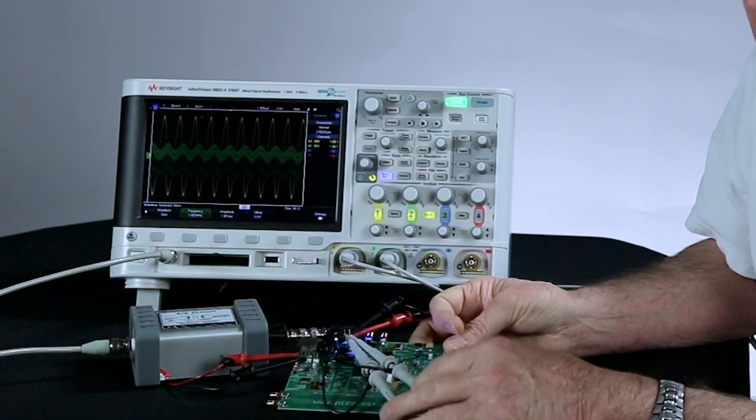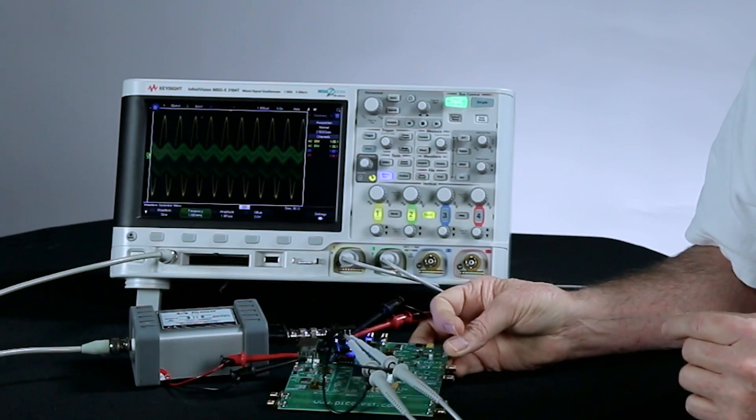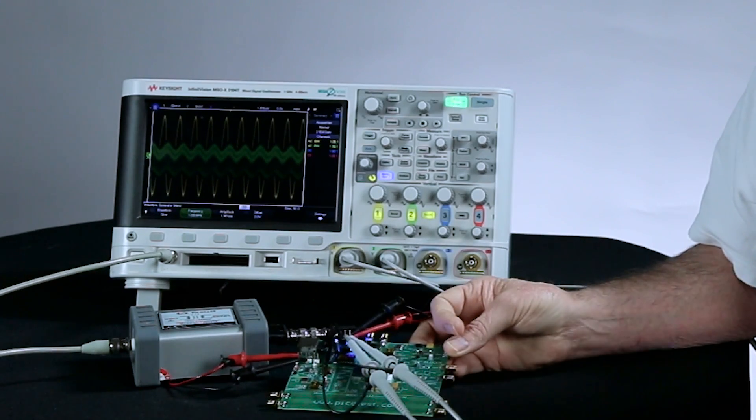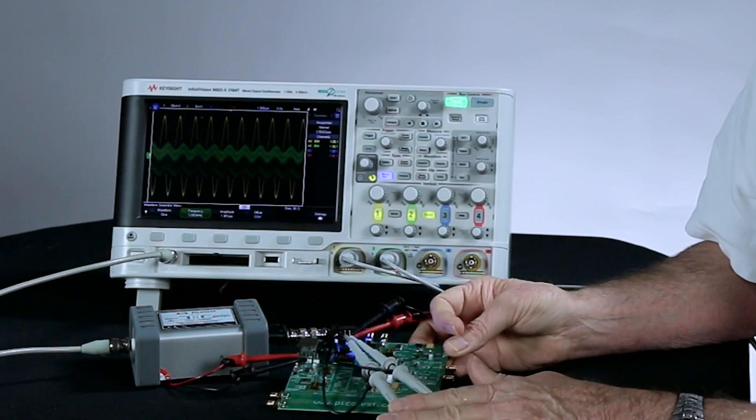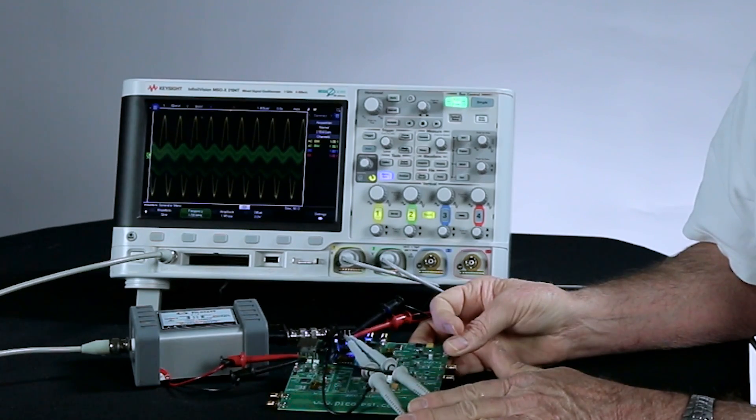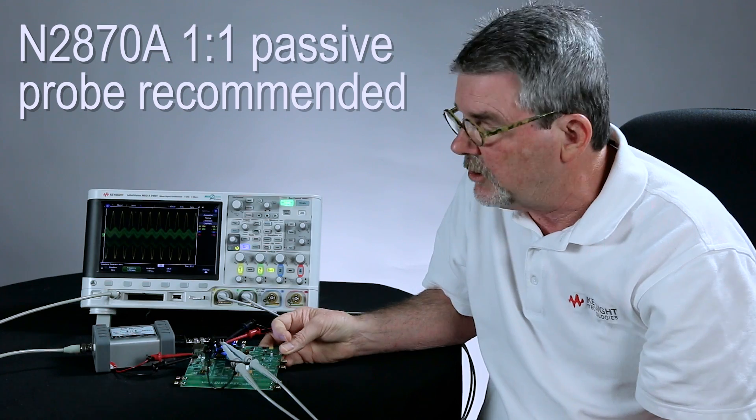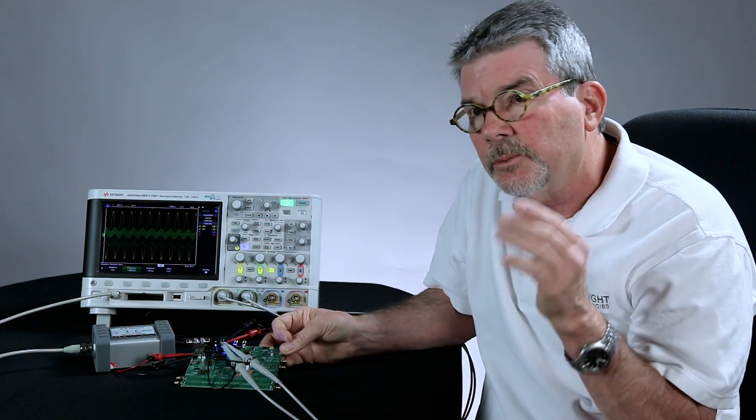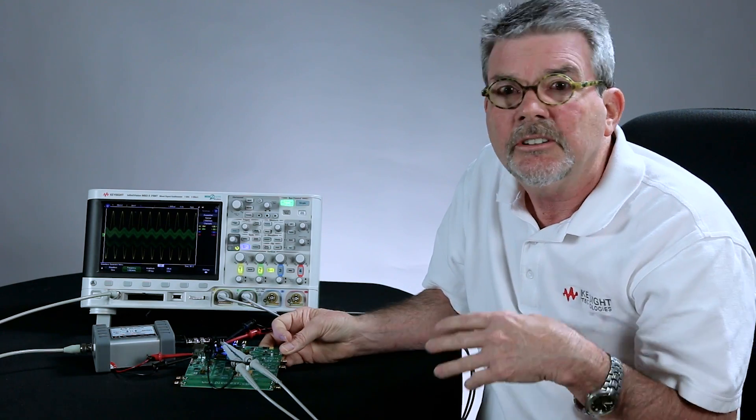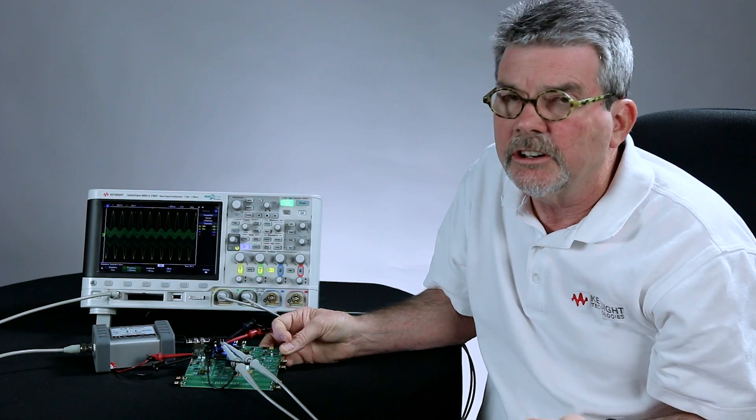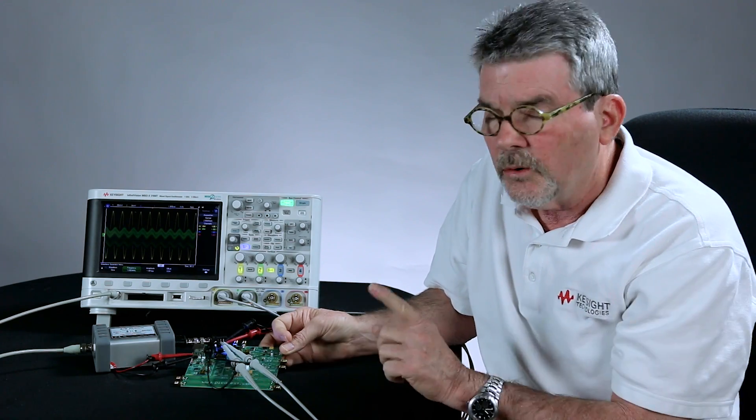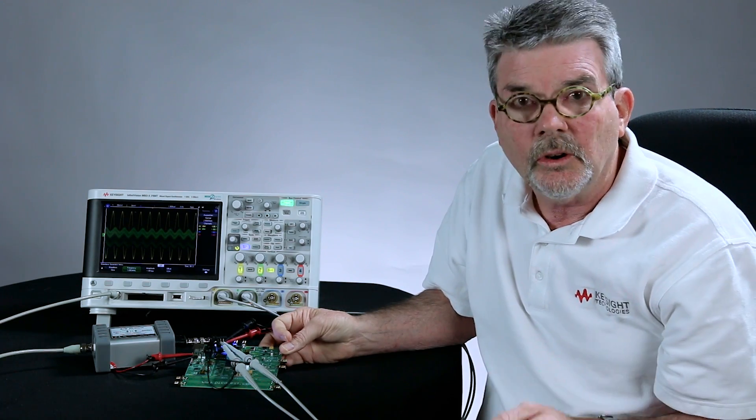So I have two probes connected across the shunt resistor to measure what's V in and V out. What I'm using is one-to-one passive probes, not the standard 10-to-one passive probes that come with the scope. 10-to-one passive probes are going to divide the signal down by a factor of 10. We're really looking at low-level signals. One-to-one probes work a whole lot better.